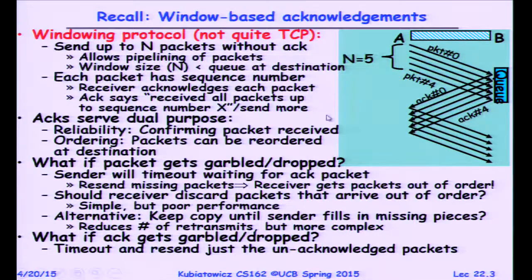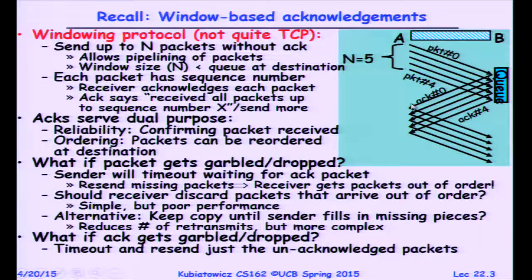The other thing we were discussing is the idea of handling both reliability and packet ordering with the same global mechanism, which is a windowing protocol. There's some number of outstanding packets — here N equals 5 — you let them be transmitted and each one has a different sequence number. At the remote side, you need a queue big enough to hold all packets in flight. Acknowledgements tell you if they made it; if not, via a timeout, you retransmit. If they did arrive, you continue your transmission.